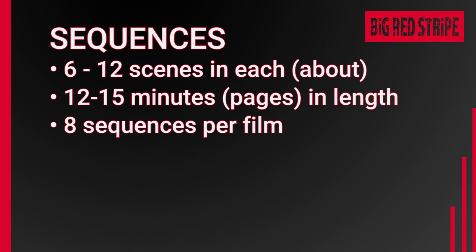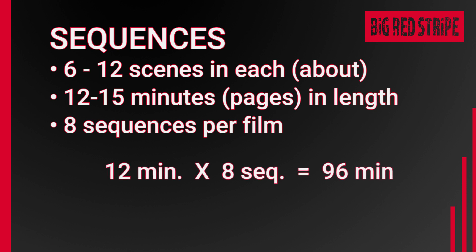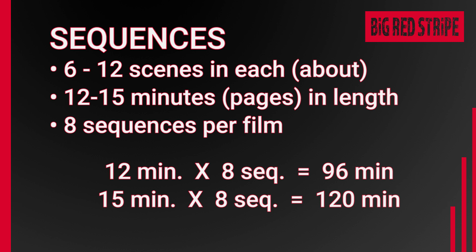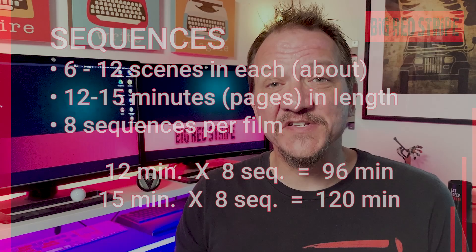Because there are usually 8 sequences in a film, the math breaks down like this: if each sequence is 12 minutes and you have 8 sequences, that's 96 minutes; if each sequence is 15 minutes, that's 120 minutes — and most movies are between 90 and 120 minutes. Working in sequences not only helps you structure your film, it helps you break it down into smaller, manageable pieces. Many writers avoid outlines because they seem so big and unwieldy, and they end up writing way more drafts than necessary because they didn't spend any time planning.